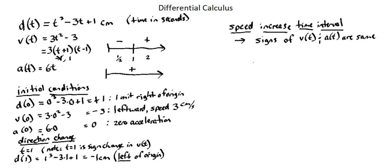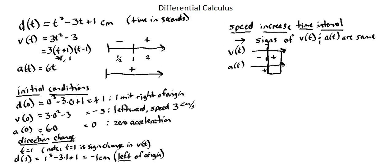I can make that evaluation based on my sign diagrams. Comparing the two: the velocity function sign diagram is negative before t=1 and positive after t=1. The acceleration function sign diagram is positive for anything after 0. So the common sign — where both functions share the same sign — is after time equals 1. After 1 second, I have positive values for both functions, so speed is increasing when time is greater than 1.